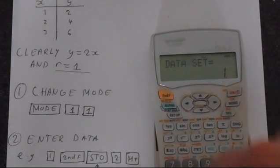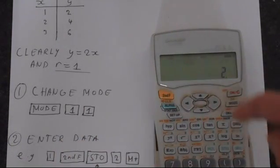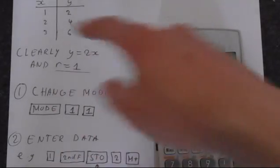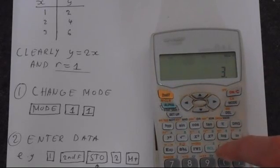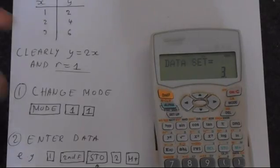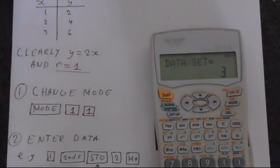So let's enter the rest of the data. So we're doing 2, 2nd function, STO, 4, M plus to save. Same thing for 3 and 6. So 3, 2nd function, STO gets the comma, 6, and M plus to save. Now we have three things in our data set, which corresponds to these rows here. And the final step is to actually do the calculation.